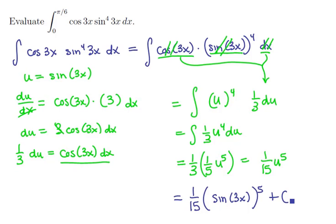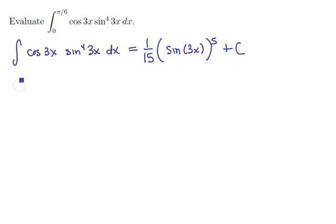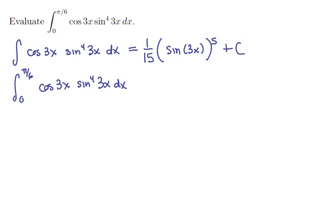Now we're ready to do the definite integral: the integral from 0 to π/6 of cosine 3x times sine to the fourth 3x dx. According to the fundamental theorem, all we need to do is take our antiderivative — (1/15) times the sine of 3x quantity to the fifth — and evaluate it from 0 to π/6.